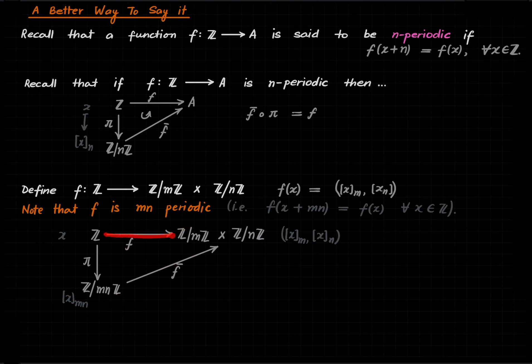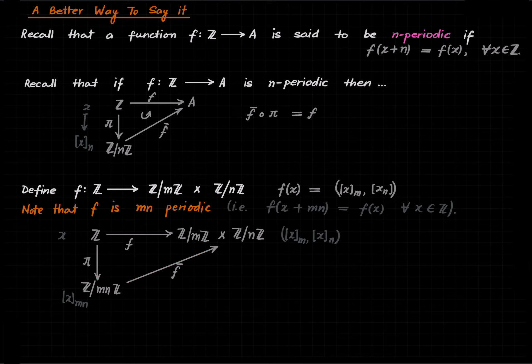Define the horizontal map, which is very clear what it is, and then it just factors through ℤ/mnℤ to give us the map f-bar. With that, I want to end this lecture. Like, comment, share, subscribe, and I will see you next time.